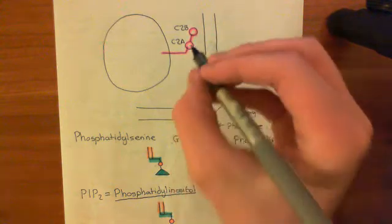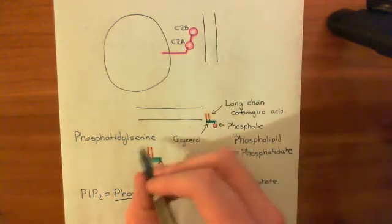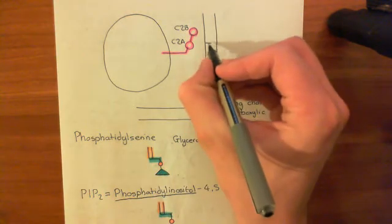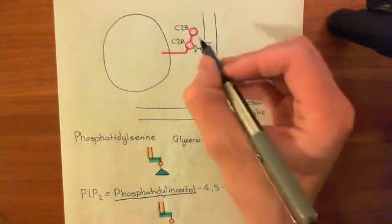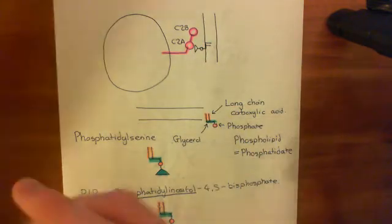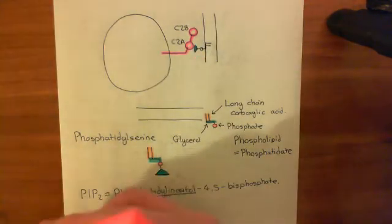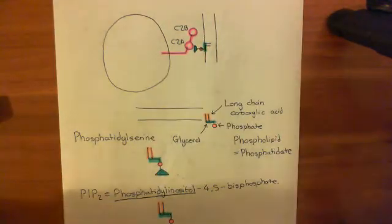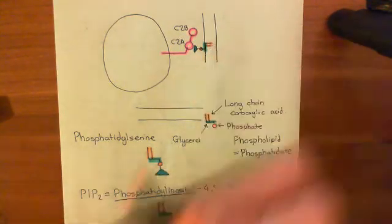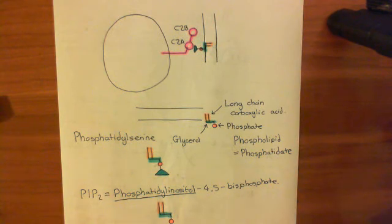What now happens is that the C2A domain is going to bind to phosphatidylserine molecules. Here are the long-chain carboxylic acids, the glycerol, the phosphate group, and the serine amino acid. The blue triangle represents the serine, the red is the phosphate group, the turquoise is the glycerol, and the orange represents the hydrophobic tails. It's fair to say that this interaction of C2A with the phosphatidylserine is the most important of all of synaptotagmin's interactions.